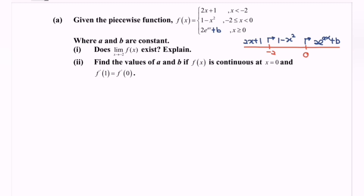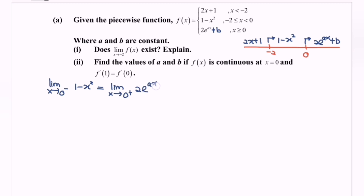For the second part: find the values of A and B if the function f(X) is continuous at X equals 0. Since f(X) is continuous at X equals 0, the limit when X approaches 0 from the left for the function 1 minus X squared equals the limit when X approaches 0 from the right for the function 2 multiplied with exponent AX plus B.